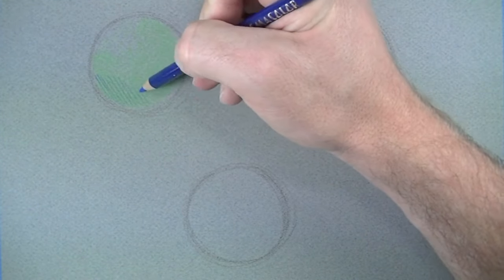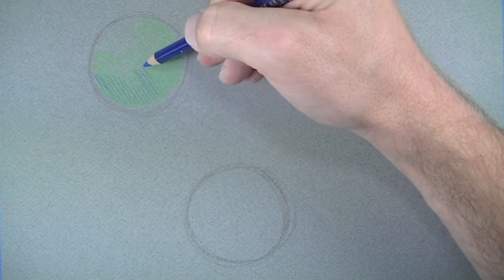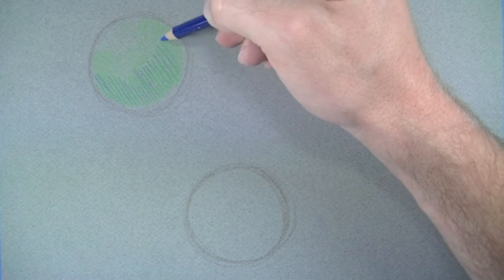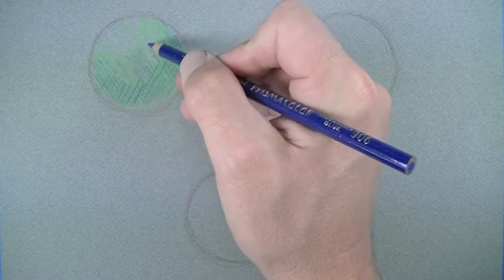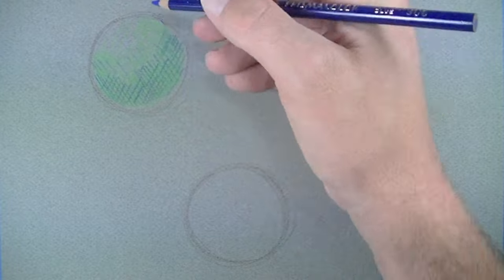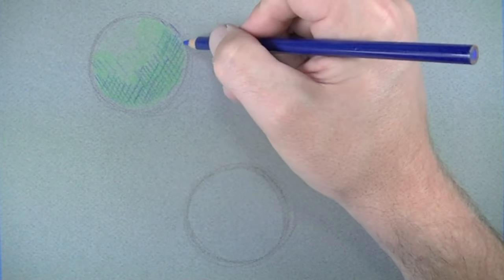We're going to use a combination of hatching and cross-hatching to build up the colors on the surface with colored pencils. In this case, we begin with a local color, which is green, and then we start to establish some of the shadows with a cooler tone.